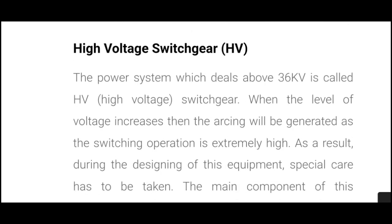Now coming to high voltage switchgear. The power system which deals above 36kV is called HV switchgear. When the level of voltage increases, arcing will be generated as the switching operation is extremely high.